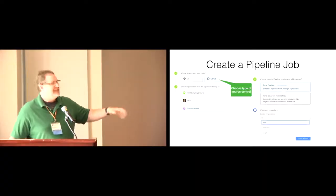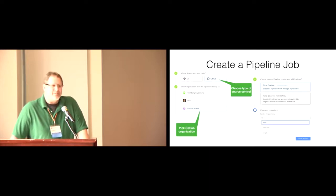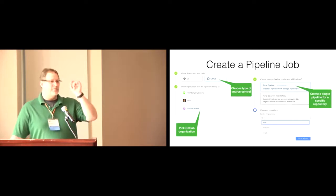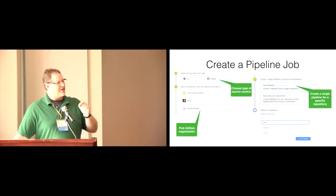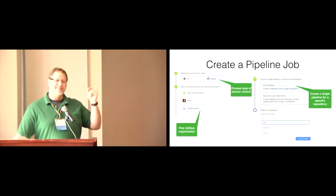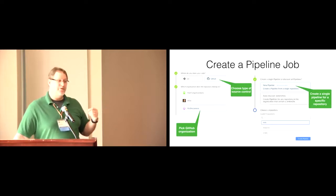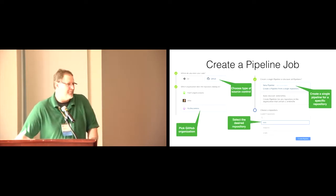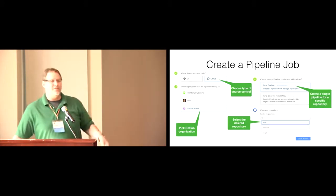Having selected GitHub, the first thing it's going to ask is what GitHub organization you're dealing with. The next thing it's going to want to know is do you want to create a single pipeline, or would you like to scan the entire organization looking for every repository that could house a pipeline definition? For this example, I'm going with a single new pipeline, and once I've done that, I tell it what the repository is — a simple Hello World application sitting in a Hello repository of PyOhio Jenkins.